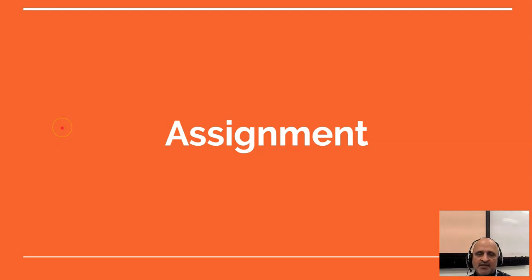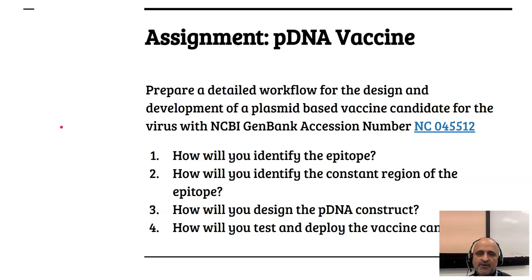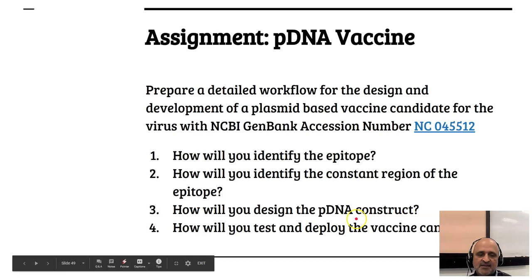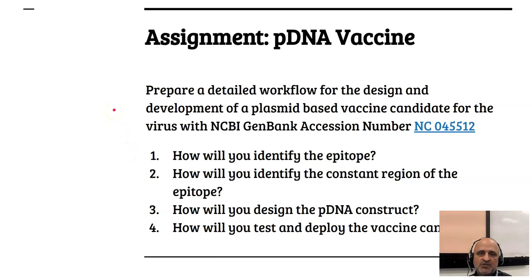Those of you attending this class can now undertake the following assignment. I have provided you with an NCBI gene accession number which you can click and access. You will be required to do the following: identification of the epitope, identification of the constant region of the epitope, designing of the plasmid DNA construct, and design of a procedure for testing and deploying the vaccine candidate. I will discuss this assignment in a future video.